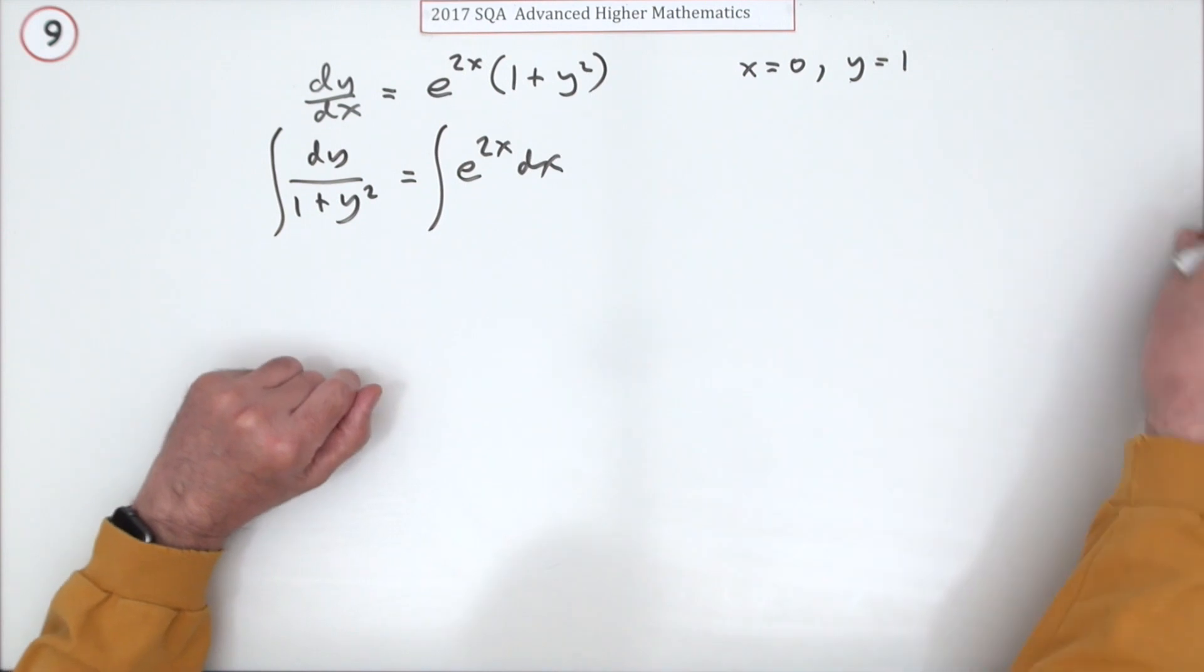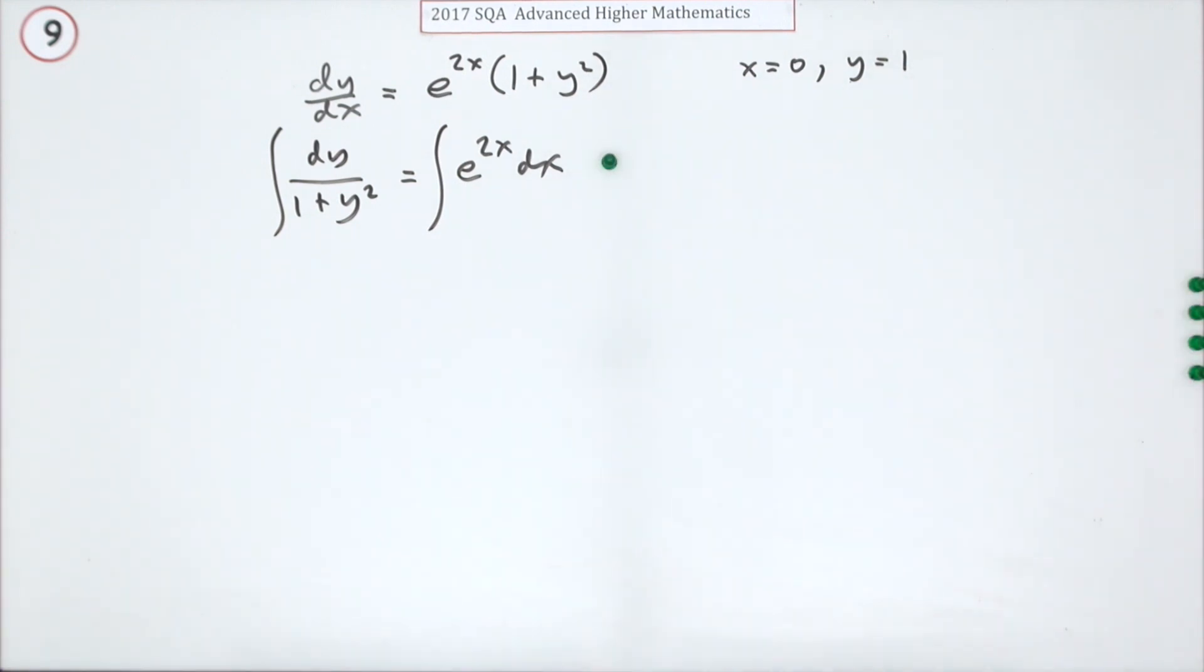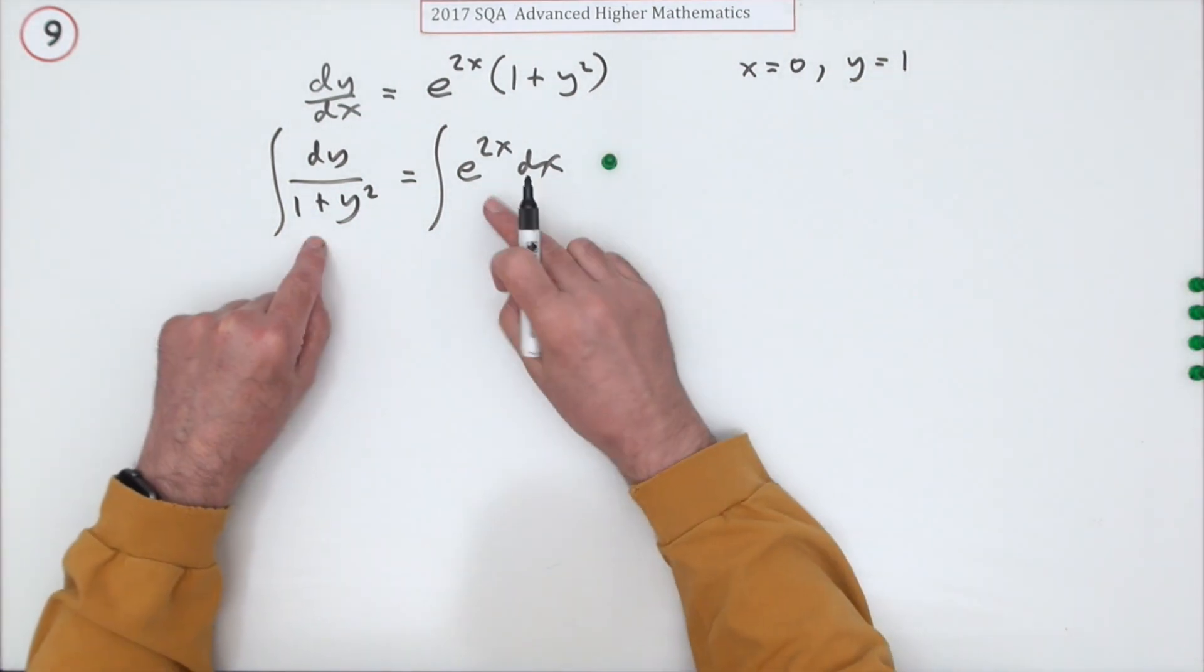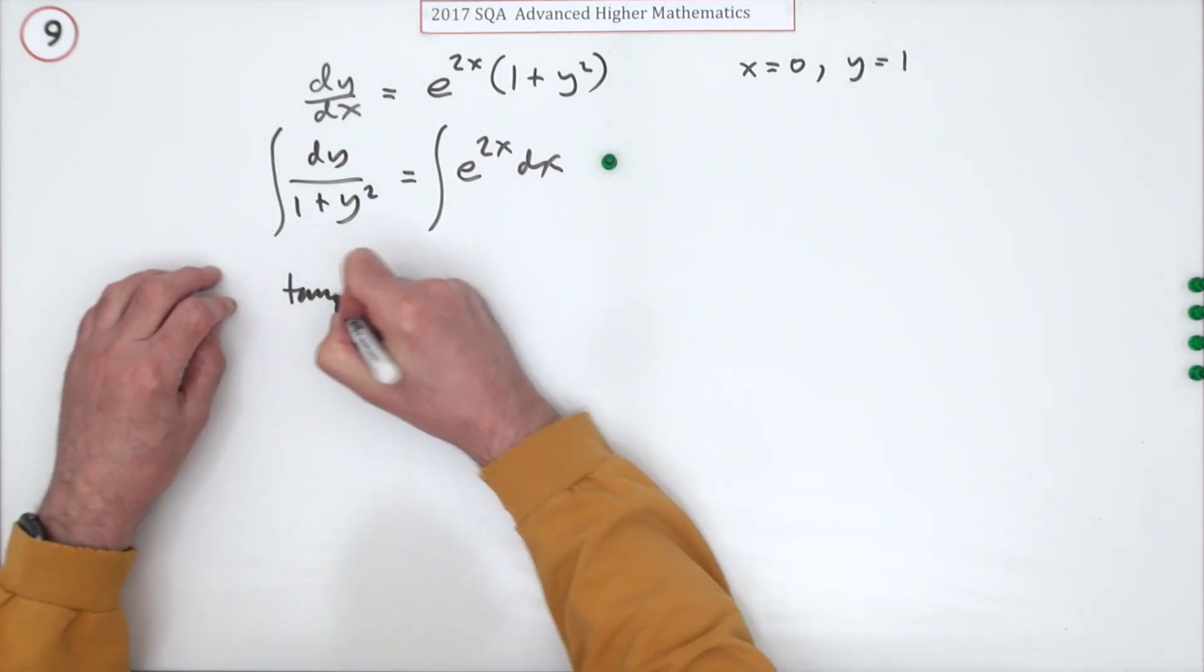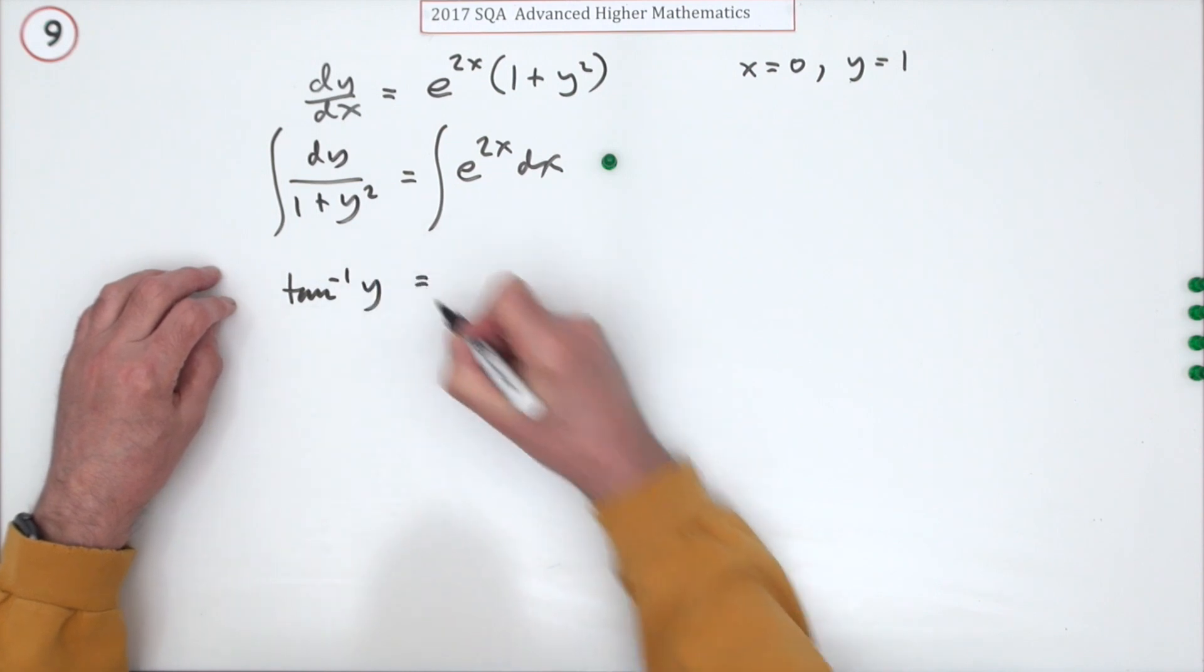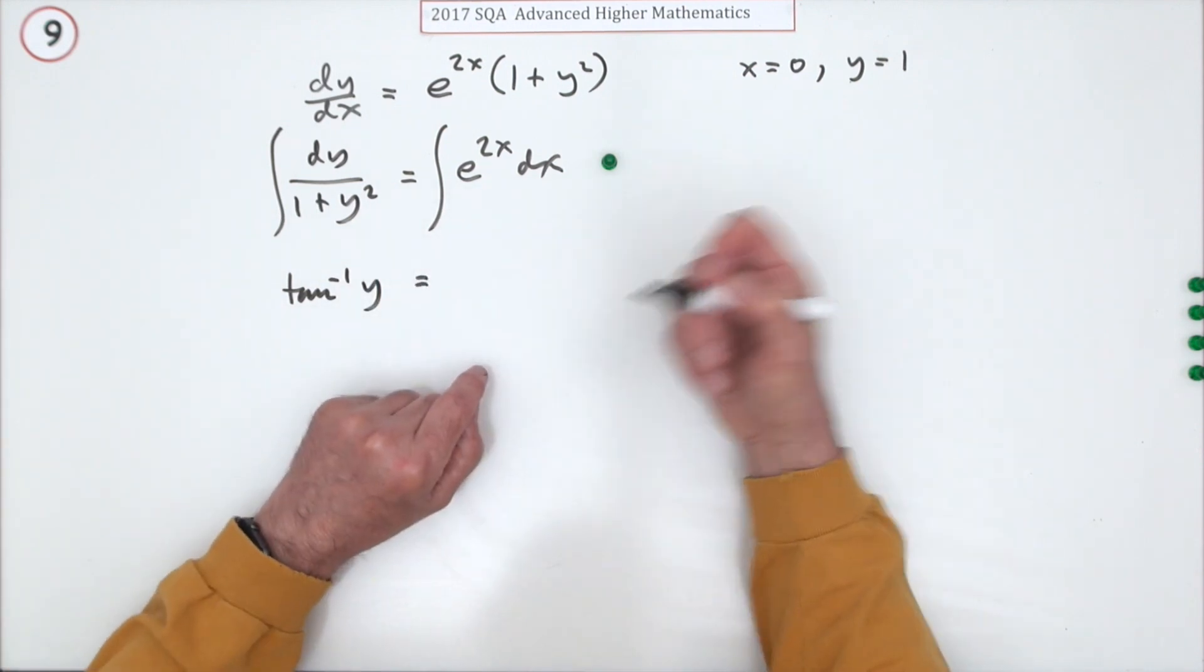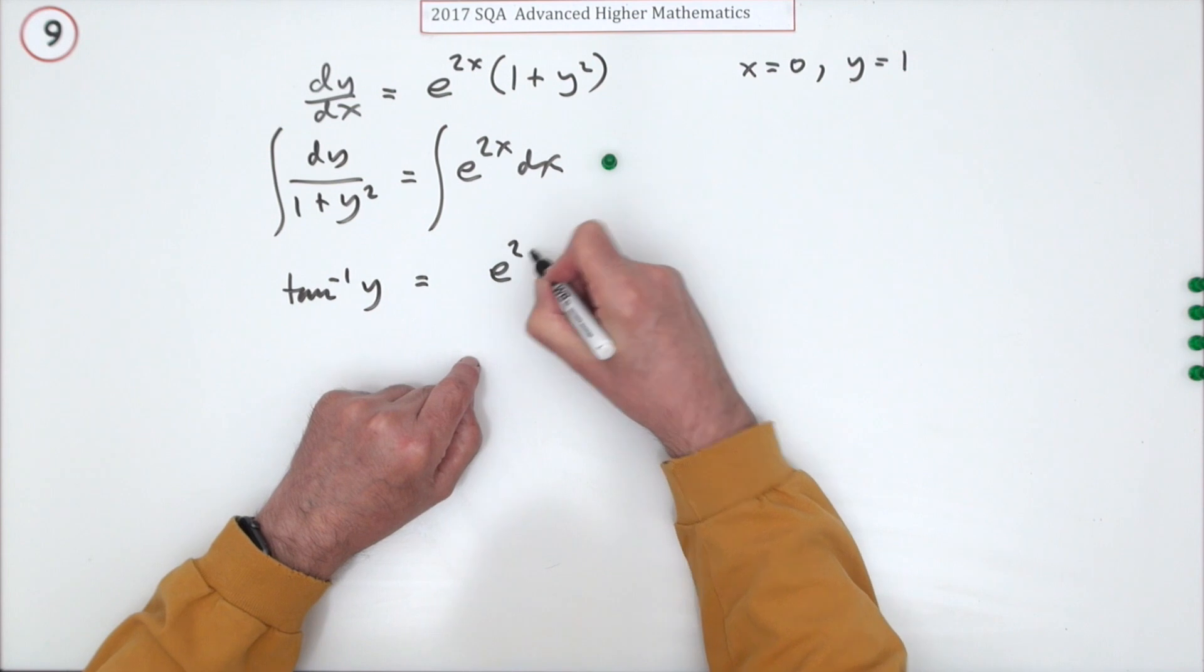So let's integrate them up and collect the first mark. Now the next part is these are readily identifiable. That's inverse tan. So we've got inverse tan of y equals.